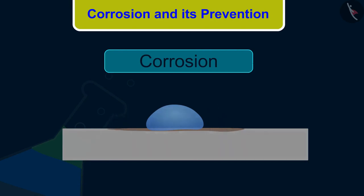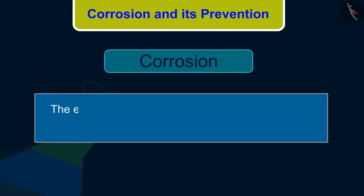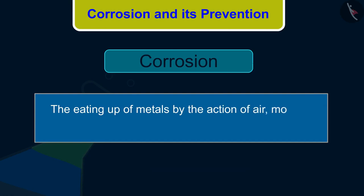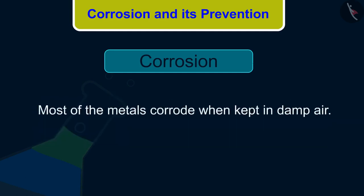So what did you understand about corrosion? The eating up of metals by the action of air, moisture, or a chemical on their surface is called corrosion. Most of the metals corrode when kept in damp air.